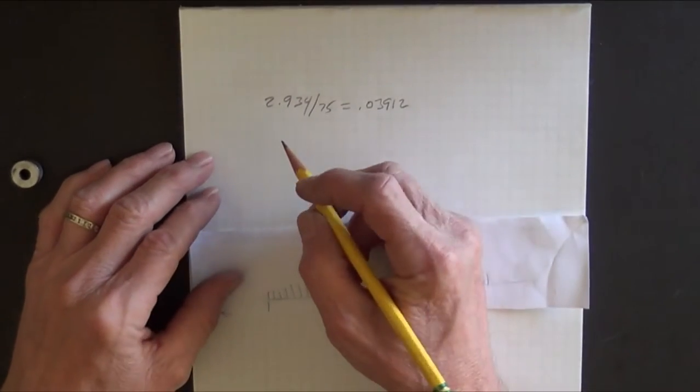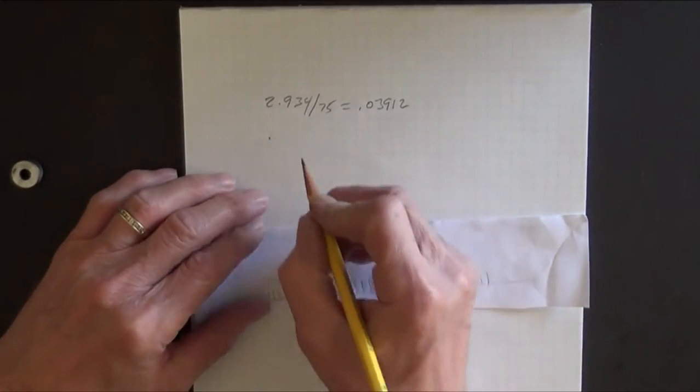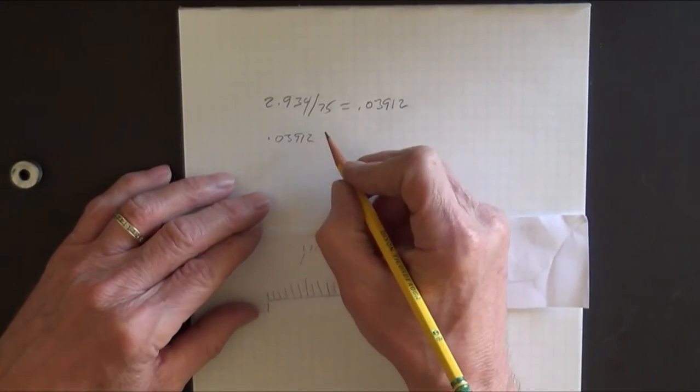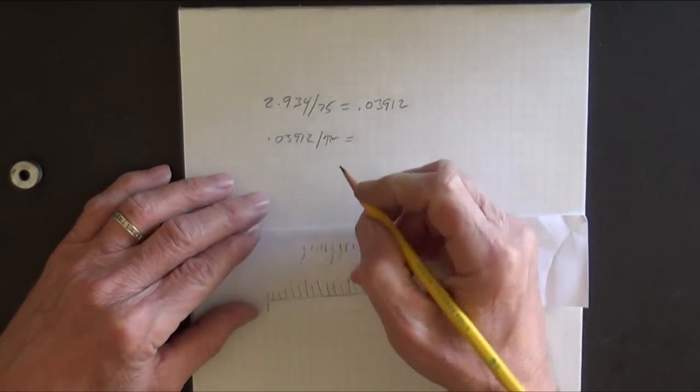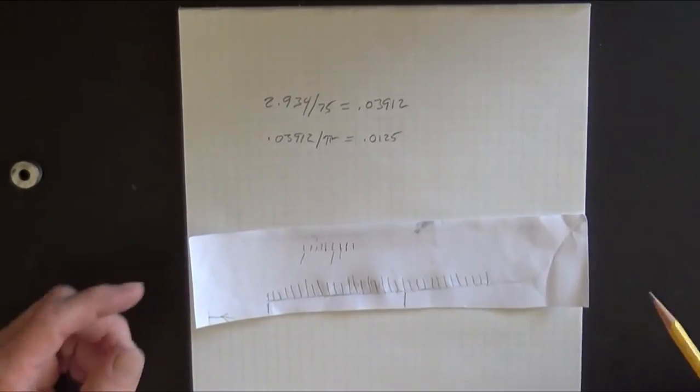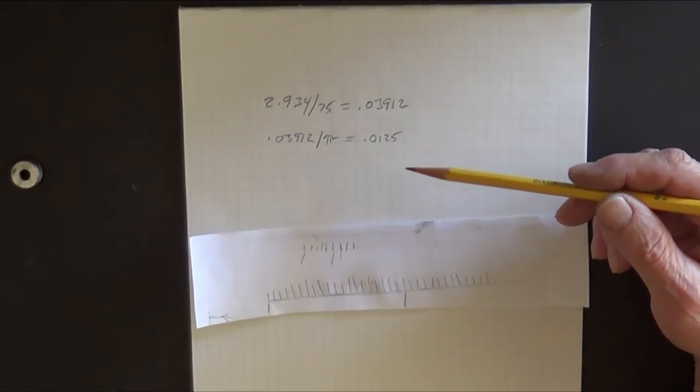That made sense. So then, I'm not sure why he did this, but he said, okay, let's take the point zero, three, nine, one, two, and let's divide it by pi. And you wind up with point zero, one, two, five, which makes his magic number here for everything.